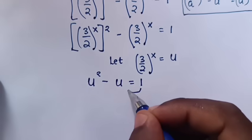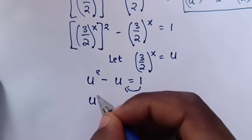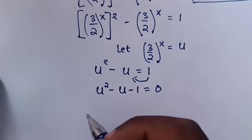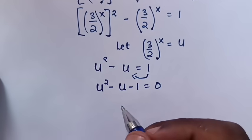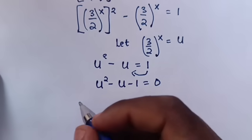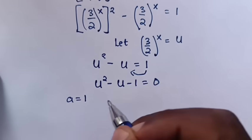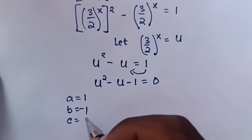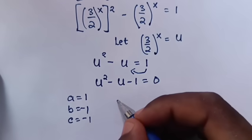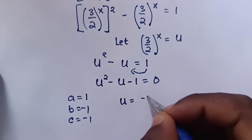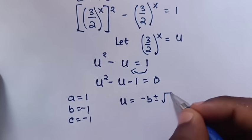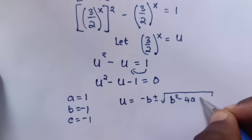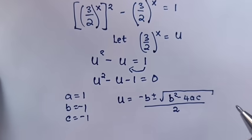We take 1 to the left side, so it will be u squared minus u minus 1 is equals to 0. To solve this quadratic equation using the formula, a is 1, b is negative 1, and c is negative 1. The formula is: negative b plus or minus square root of b squared minus 4ac, over 2a.